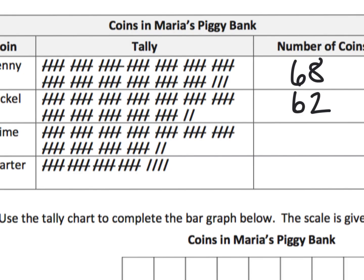We can label that 57 — and those were dimes. And lastly, our quarters right here. We've got 5, 10, 15, 20, plus four more gives us 24.